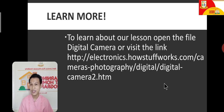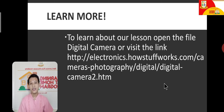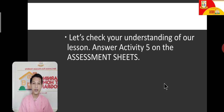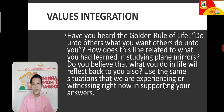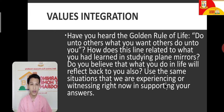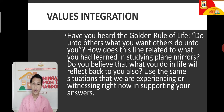That's it for our last lesson. If you want to learn more about digital cameras, visit the link given on your learning packet or open the document file and read about it. If you are now ready to take the assessment, you can start answering activity 5 on your assessment sheets. If you still have questions, you can ask during our consultation time. Also, answer the values integration found on your assessment sheets: how does the golden rule — 'do unto others what you want others to do unto you' — relate to the lesson on plane mirrors? Do you believe that what you do in life reflects back to you?